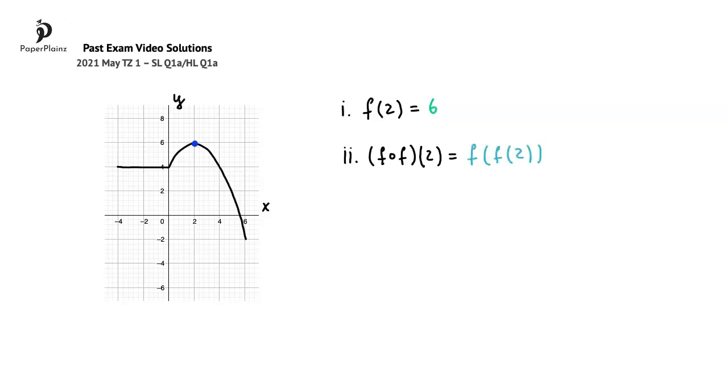We have already found f of 2 above which is 6, so working further I can write that this is equal to f of 6. To find f of 6 we'll once again go to the graph and find a point where the x coordinate on the graph is 6, which is here. Since the y coordinate of this point is negative 2, our answer here is negative 2.